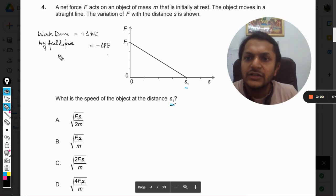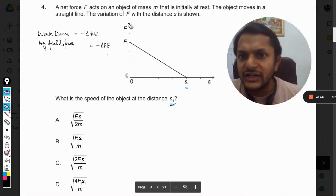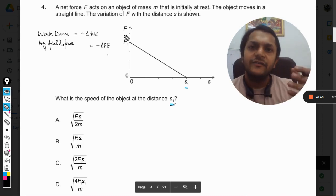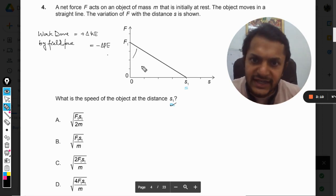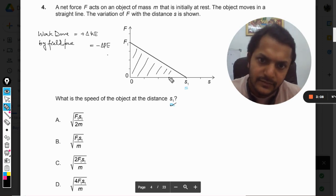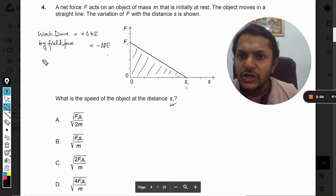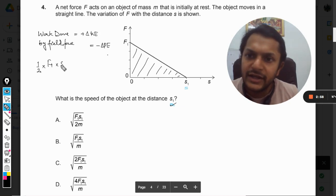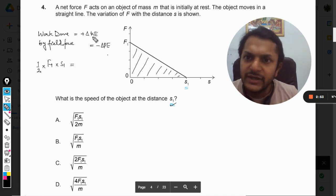Now how to find the work done? We know that work done can be found by finding the area of the F and s curve. This area will be equal to the work done by the force. This is a triangle, so the area will be half into height into base - half into F_1 times s_1.